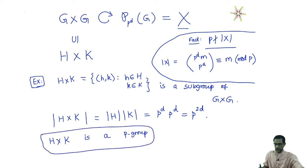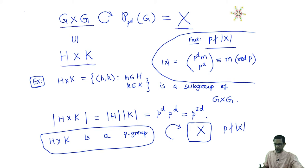We are slowly bringing things into the formalism of our fixed point principle. Here is a P-group, and here is a set X whose cardinality is not divisible by P — I have the two ingredients I want. I have a P-group, I have a set X, and in fact there is an action of this P-group on this set X. The entire big group G cross G acts on X, and H cross K is a subgroup of the big group. When you have an action of the ambient group, you automatically get an action of any subgroup by just restricting the action.